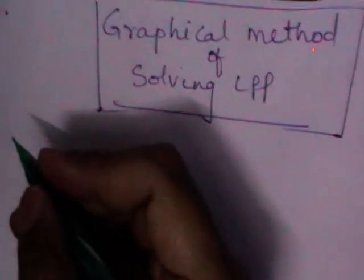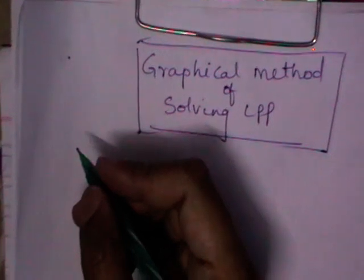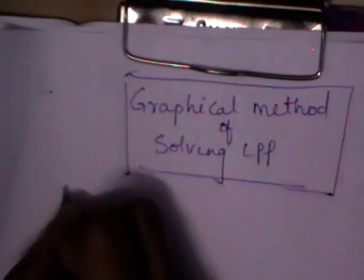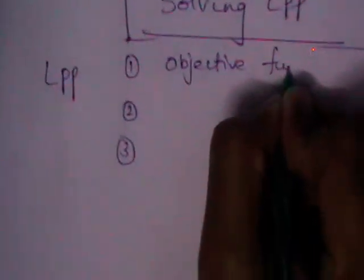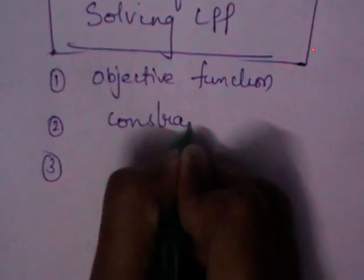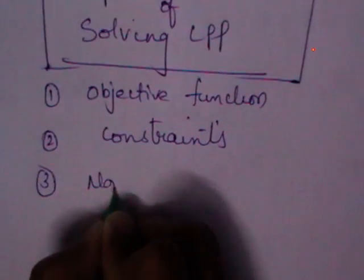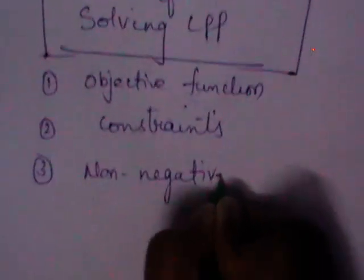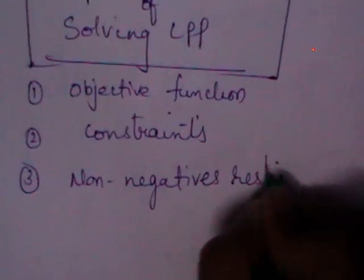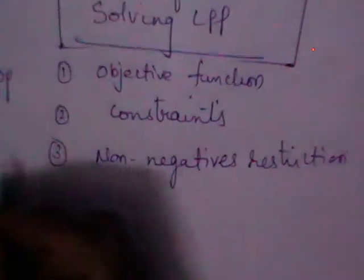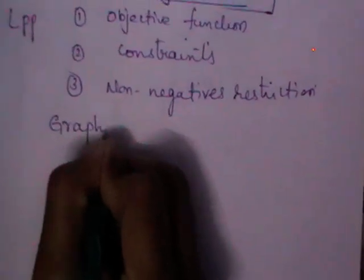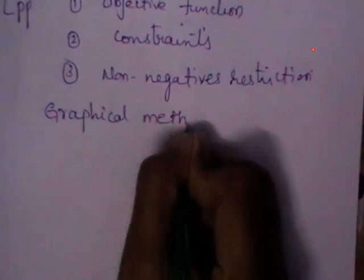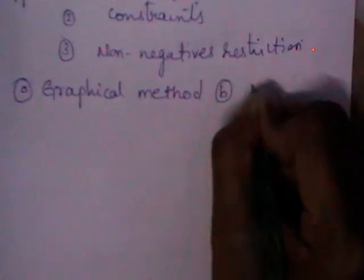After formulating an LPP, you need to solve it to obtain the values of the decision variables. An LPP consists of three parts: the objective function, constraints, and non-negative restrictions. An LPP can be solved either by the graphical method or by using the simplex algorithm.